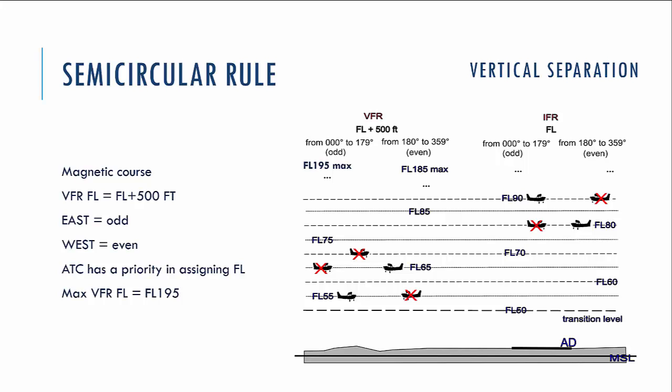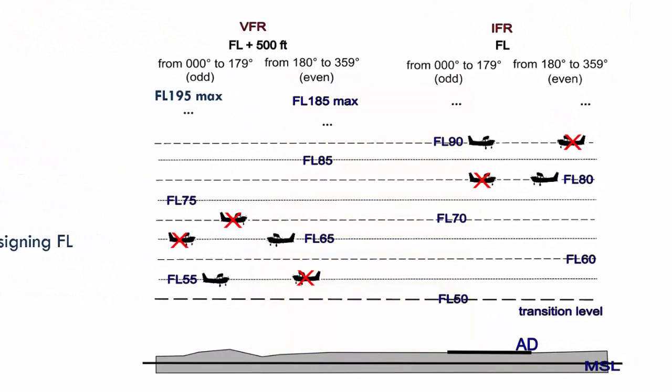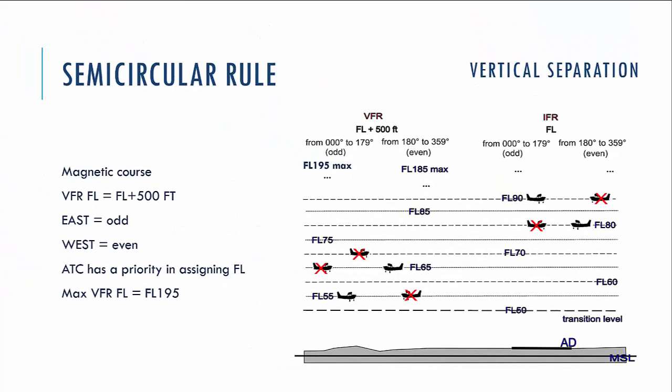Finally, let's talk about the semicircular rule. This rule is created to provide traffic separation between VFR and IFR flights, and also between traffic flying in opposite directions. The idea is that for VFR flights, there is a 500-foot shift for flight level. That means all flight levels available for VFR flights end with 5 — for example, flight level 55, 65, 75, and so on. For IFR flights, the flight level ends with 0.